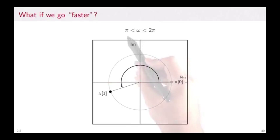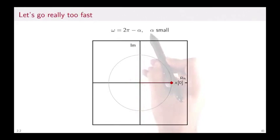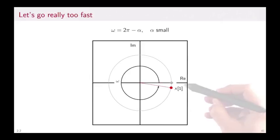If the frequency is between π and 2π, then there is this illusion that we can either think of it as a positive frequency slightly larger than π, or a negative frequency slightly smaller than π. When ω = 2π - α, and α is small, then of course we are going to most likely think that it's actually a negative frequency. Here we have an example of x[1], which is 2π - α away, but is also minus α from the real line. And if we do this, we see now that we have the sense of a negative frequency.